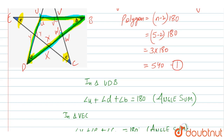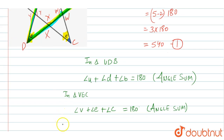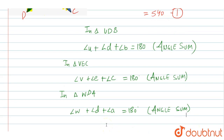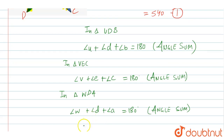Going clockwise, we take triangle WDA. In this triangle: angle W plus angle D plus angle A equals 180°, again by the angle sum property, since the sum of all angles in any triangle equals 180°. This is equation 4.